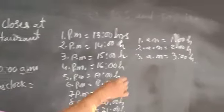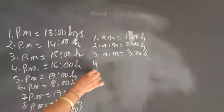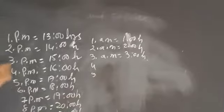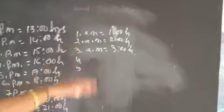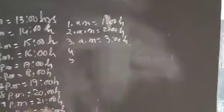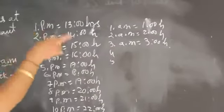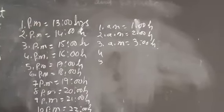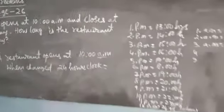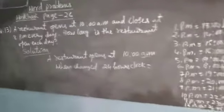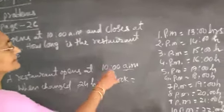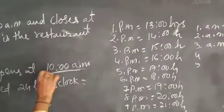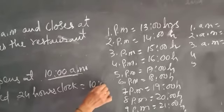Do you understand? 4 am means 4 hours, 5 am means 5 hours, 6 am means 6 hours — up to 12 noon the time will not change, same hours. Then 1 pm will change to 13 hours — that is 24-hour clock. So 10 am means 10 hours.